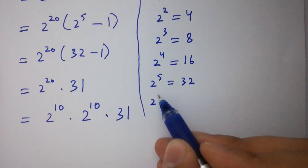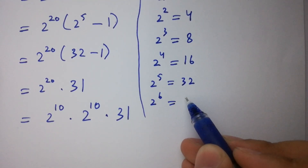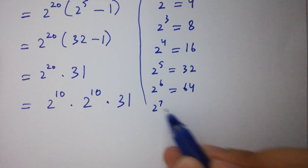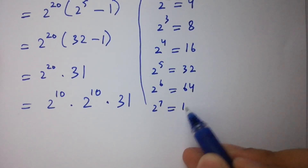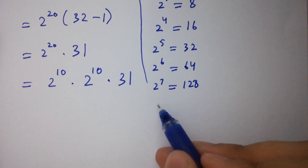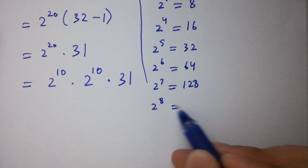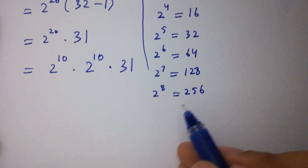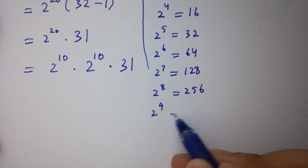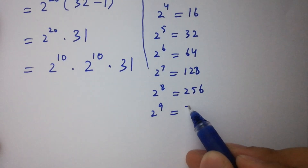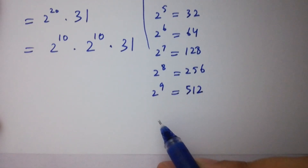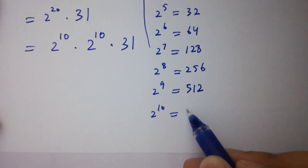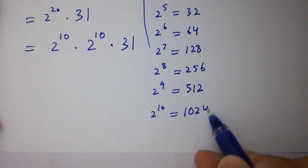Now computing powers of 2: 2 to the power 6 equals 64, 2 to the power 7 equals 128, 2 to the power 8 equals 256, 2 to the power 9 equals 512, and 2 to the power 10 equals 1024.